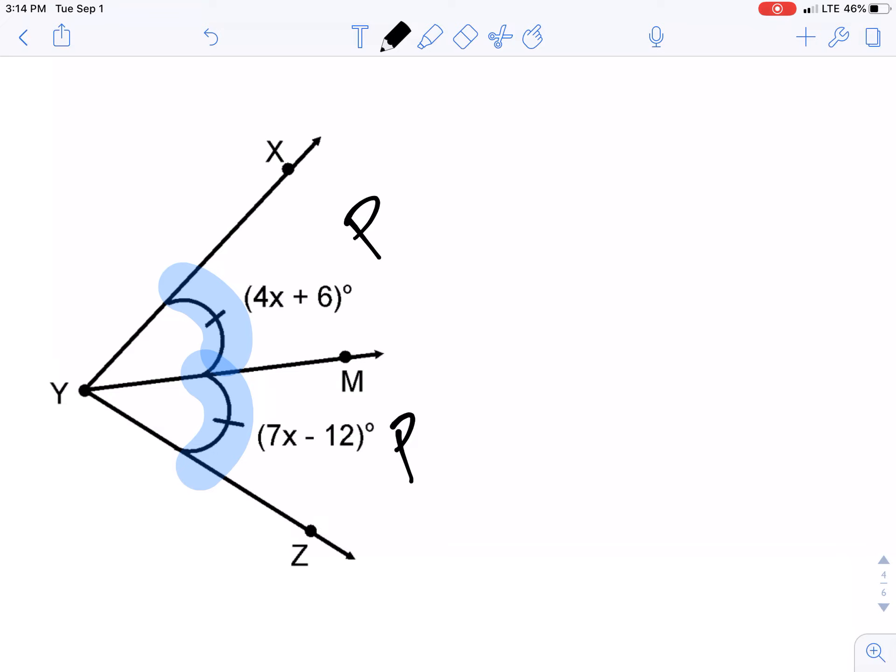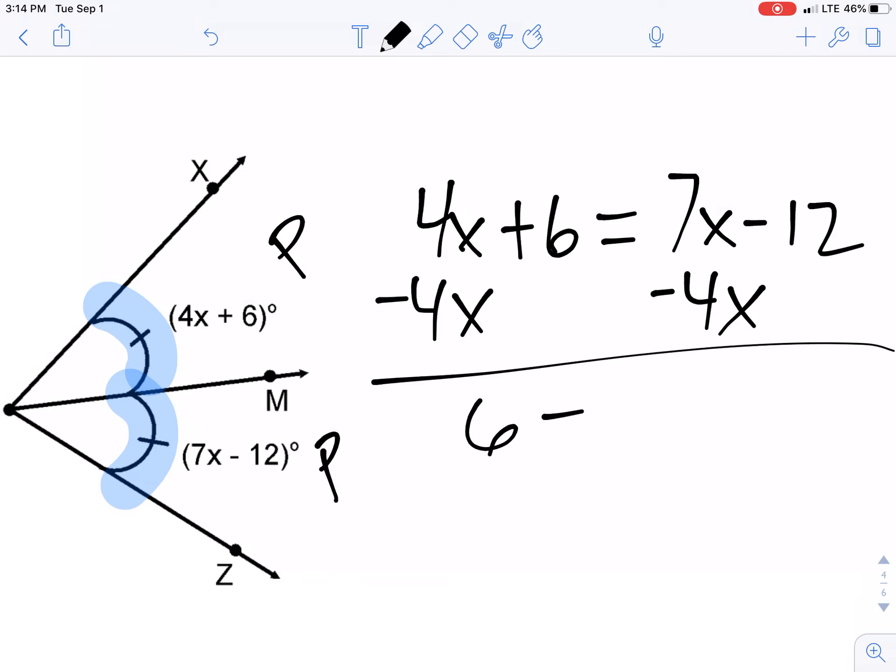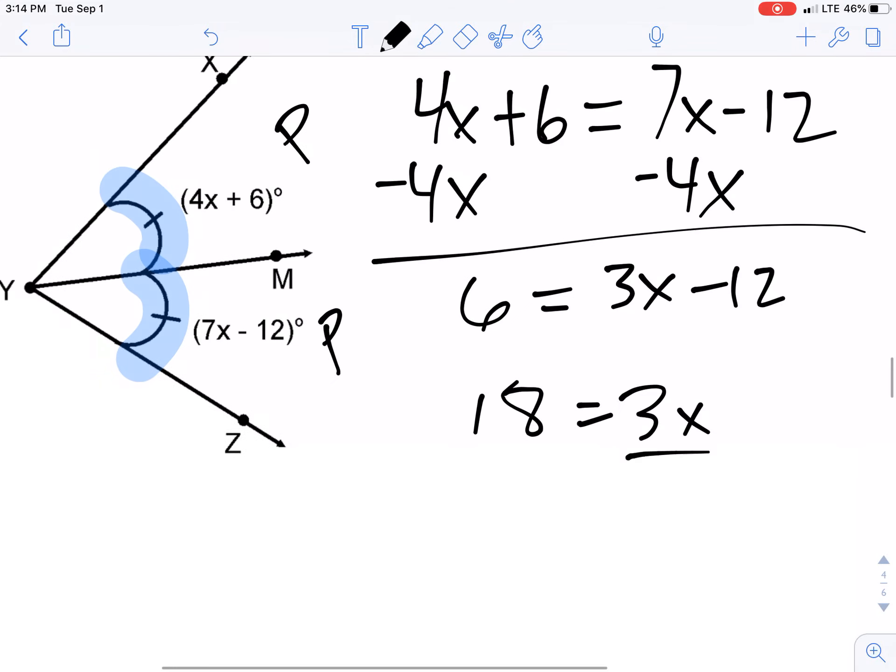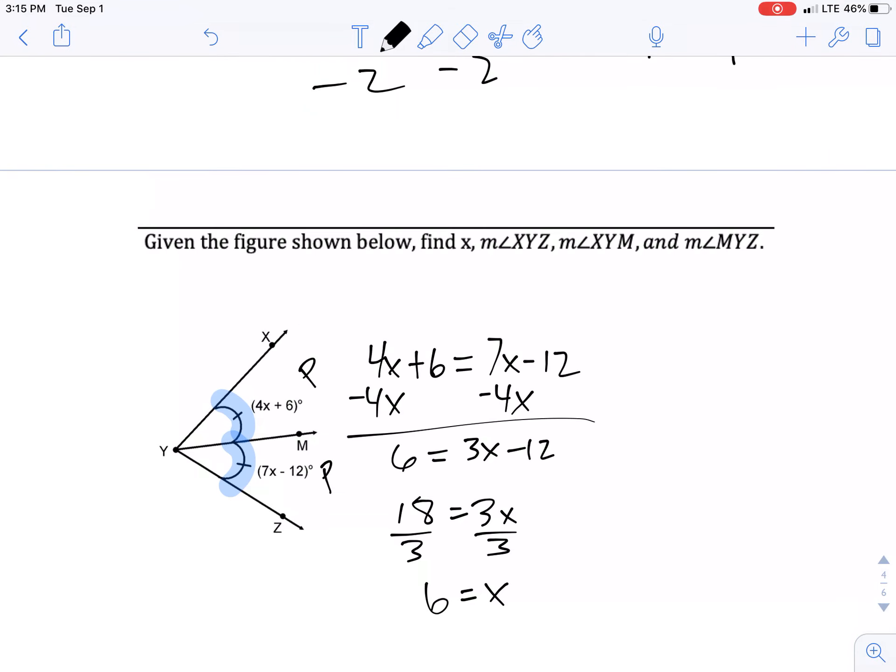We're going to do and set the parts equal to each other. So we're going to do 4x+6 equals 7x-12. Subtract the 4x because on opposite sides of the equal sign. 3x-12. Add the 12, we get 3x is equal to 18. Divide by 3, x is equal to 6.